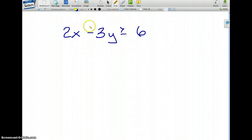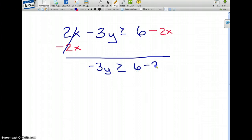So the first thing we're going to have to do here is we're going to have to subtract 2x on both sides of the inequality. So that leaves you with, that's going to leave you with negative 3y is greater or equal than 6 minus 2x.